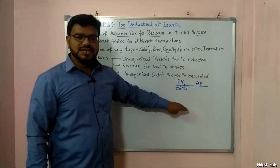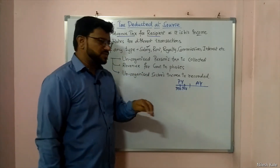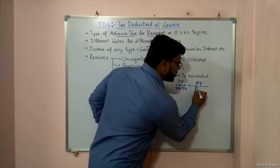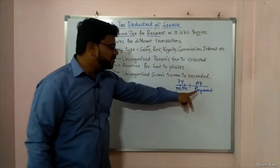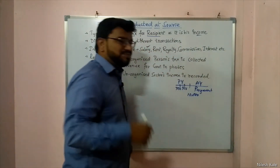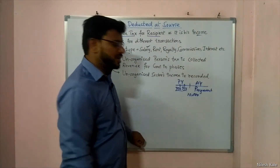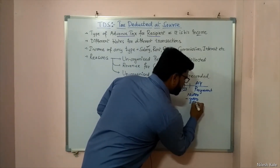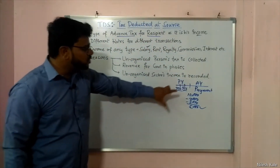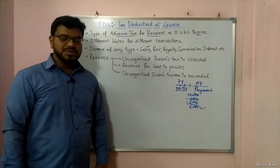TDS and TCS are as good as advance tax — revenue generated from citizens and businesses in phases. In the assessment year, whatever payment you are making is after TDS and TCS. For example, if you have a 10,000 rupee tax payment to be made, but your TDS is already cut — suppose 3,000 TDS and 2,000 TCS are already cut — then you only need to pay 5,000 tax to the government.